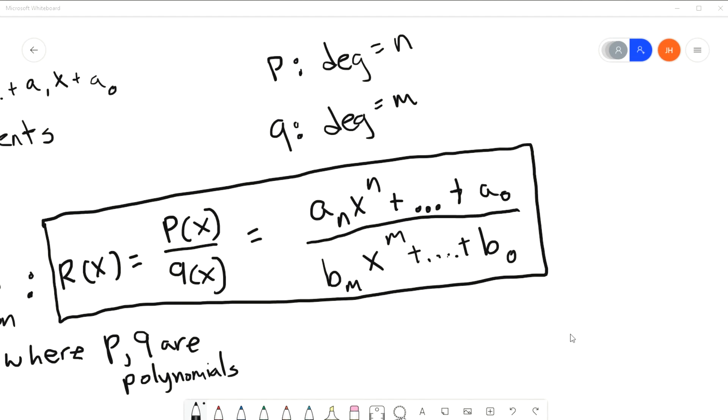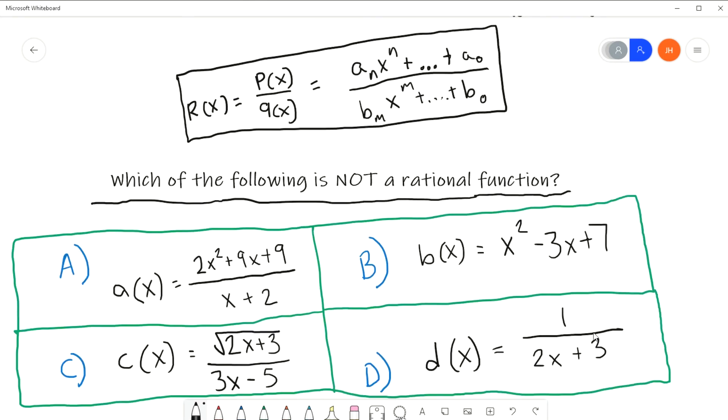But now, we're going to go ahead and move on to thinking about some examples. And I'm going to show you all four different examples of functions. And I want you all to choose which of those functions is not, I repeat, which one is not a rational function. All right, y'all. So, go ahead and take a look at these four different functions. A of x, b of x, c of x, and d of x. And I want you to take a moment.